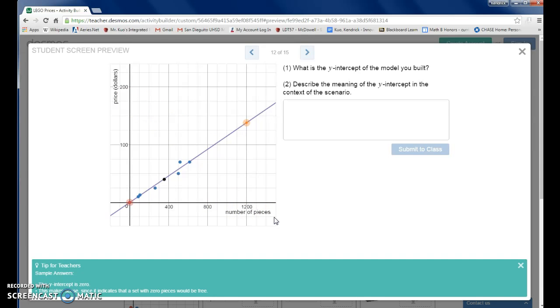Generally, that is the correct statement to say. So in this case, the y-intercept seems like it's at the origin, which is 0, 0. And what that means is for 0 pieces of Legos, you pay 0 dollars.